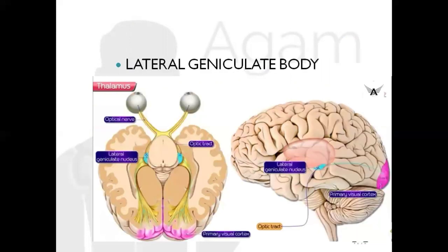Next is the lateral geniculate body. The lateral geniculate body receives projections of the optic tract from both eyes. Taking the optic tract of the right side as an example: it has temporal fibers from the same side and nasal fibers from the opposite side. It projects to the lateral geniculate body, which then projects to the primary visual cortex — Brodmann's areas 17, 18, and 19. So the lateral geniculate body is for relay of optic sensations.